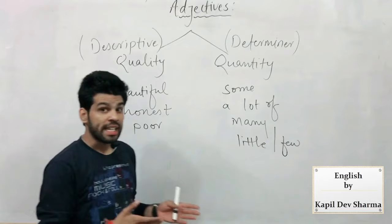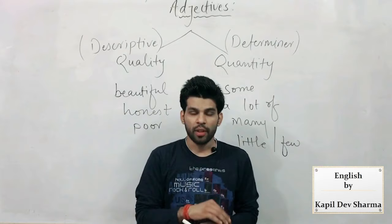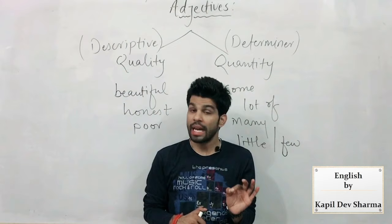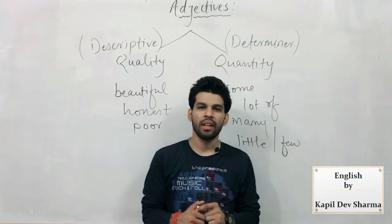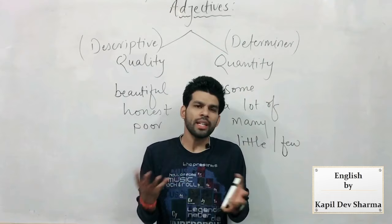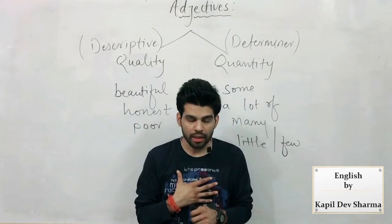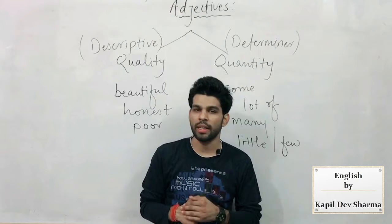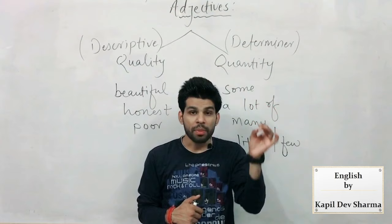Wait — एक चीज़ mention करना रह गई, pretty important. Listen to me carefully — English के 8 parts of speech में: noun, pronoun, adjective, verb, adverb, preposition, conjunction, or interjection. I repeat: noun, pronoun, adjective, verb, adverb, preposition, conjunction, or interjection. Article नाम की कोई भी चीज़ parts of speech में नहीं आती। आप check कर सकते हैं — conjunction और interjection के बाद article का नाम नहीं आता।